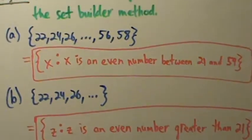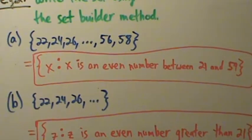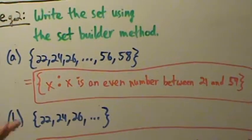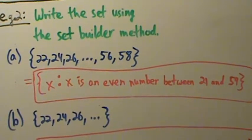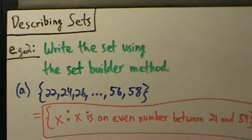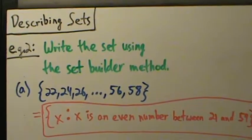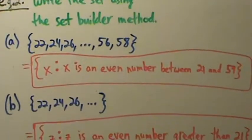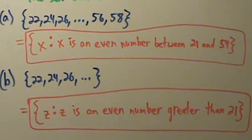So those are two examples of converting from the listing method to set builder notation. That's example two, and there are our answers.